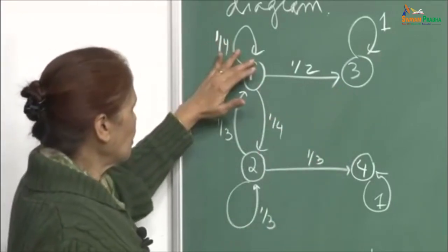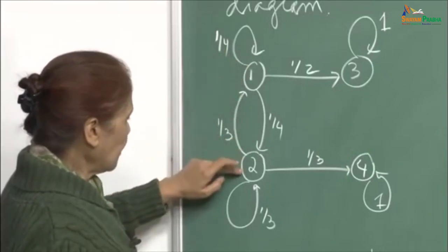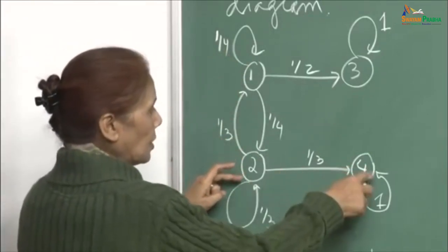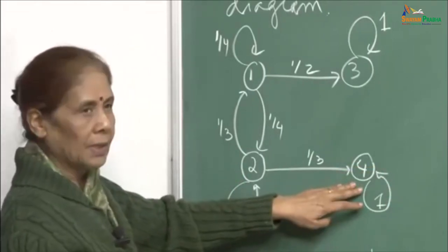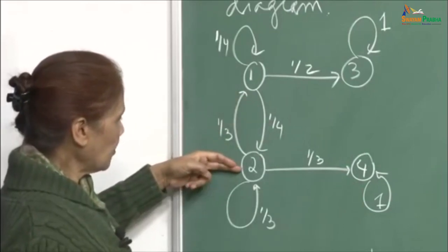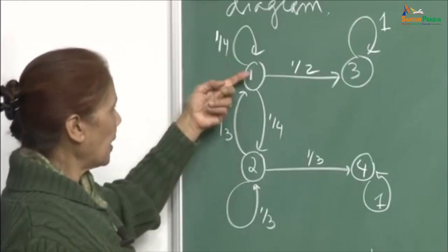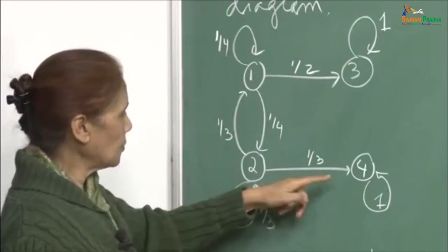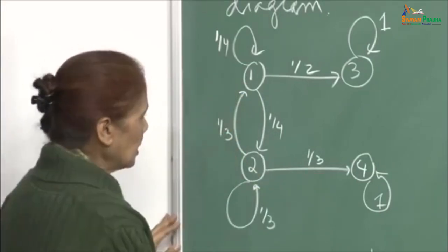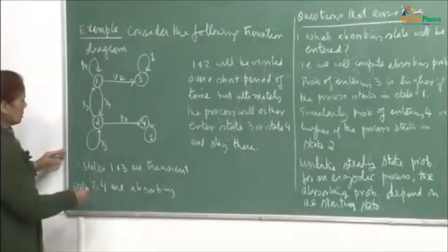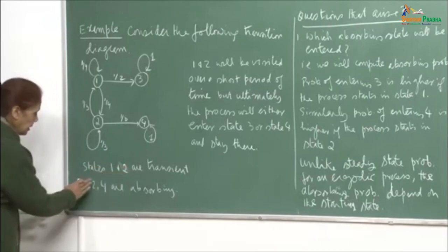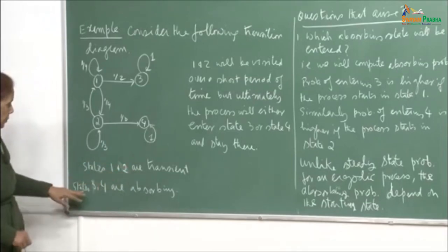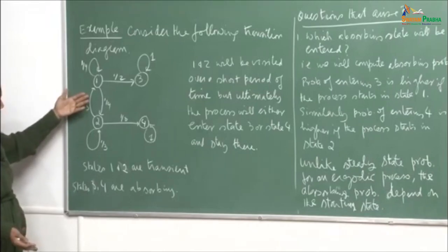Similarly, from 1 it can go to 2, and then from 2, if it transitions finally to 4, then 4 is an absorbing state and so the process will again stop there. From 2, you can also go to 1 and 3, or 2 to itself, or 2 to 4. So 1 and 2 are transient and 3 and 4 are absorbing, which you can immediately see just by looking at the transition diagram.